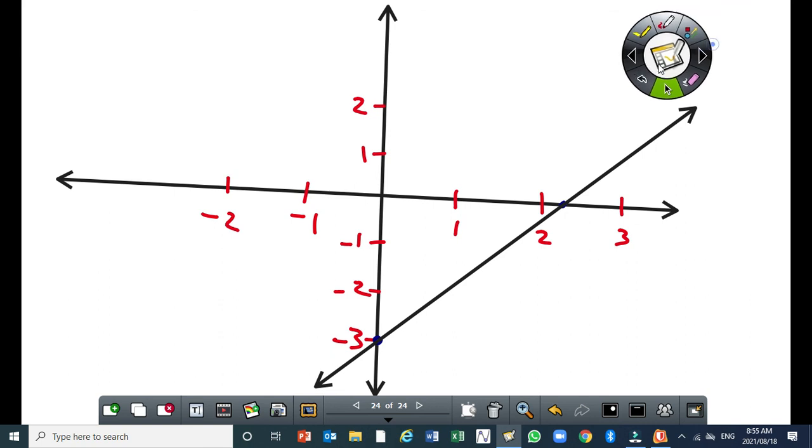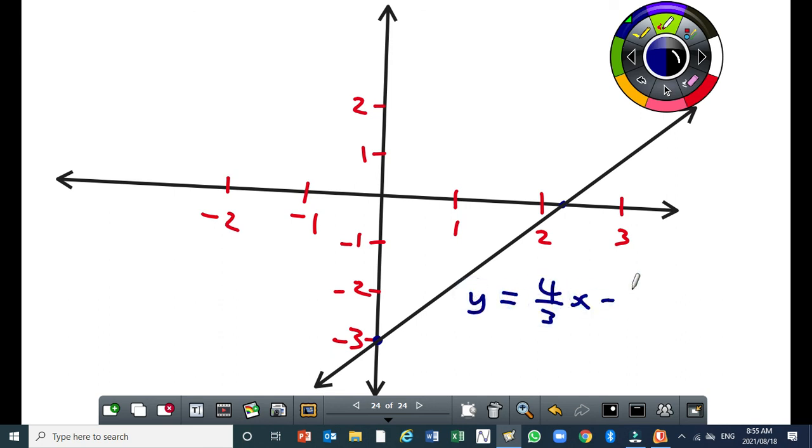Then you label it. Now when you're labeling it, you can label it as y equals to 4 over 3x minus 3. If you want, you can also label it as the original equation. It's still fine.